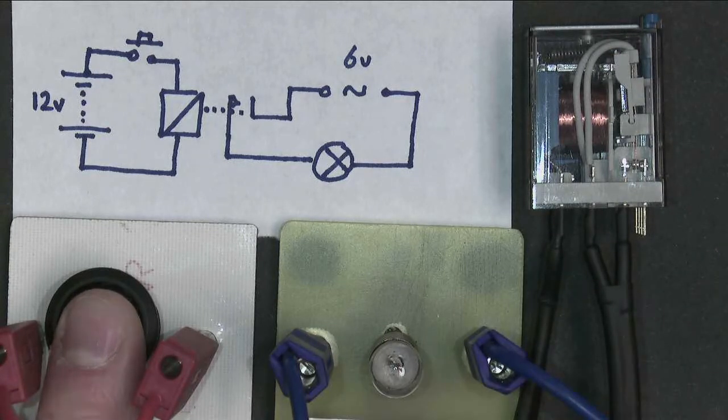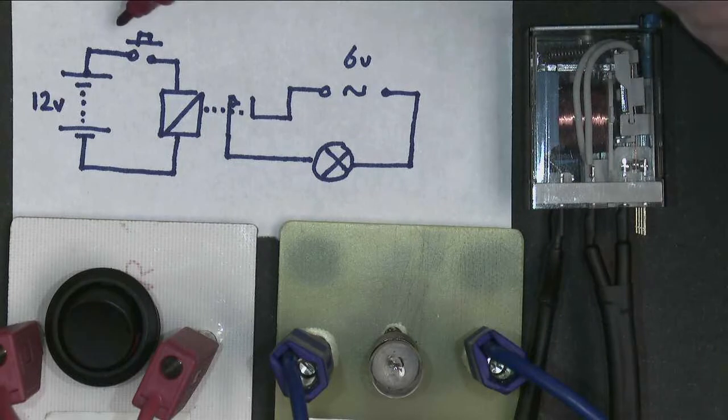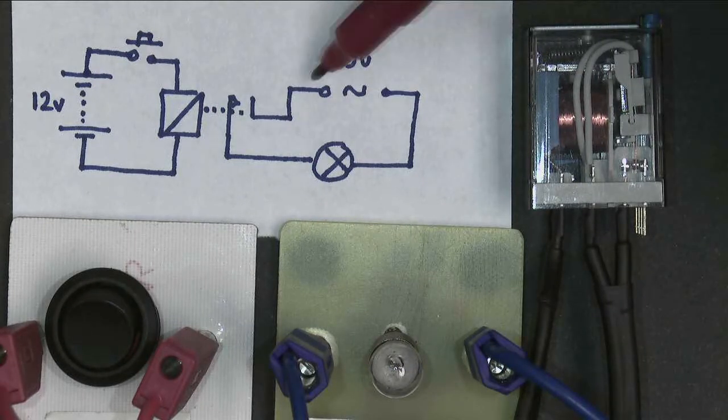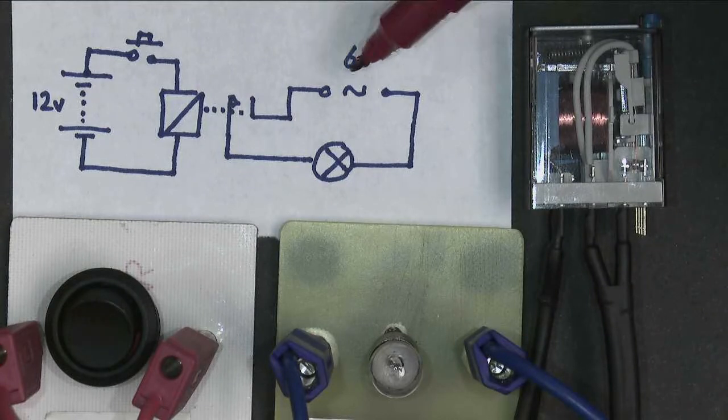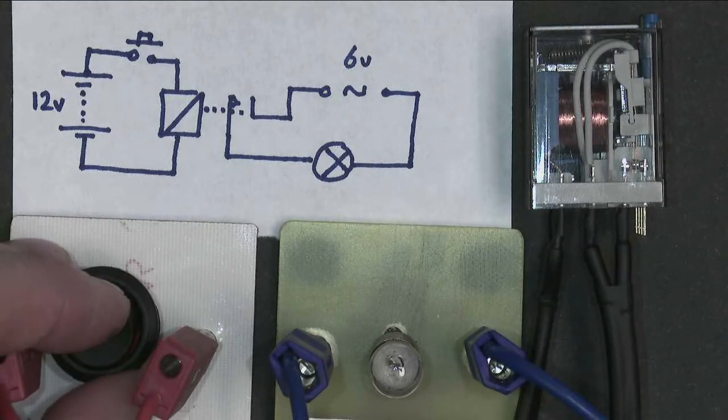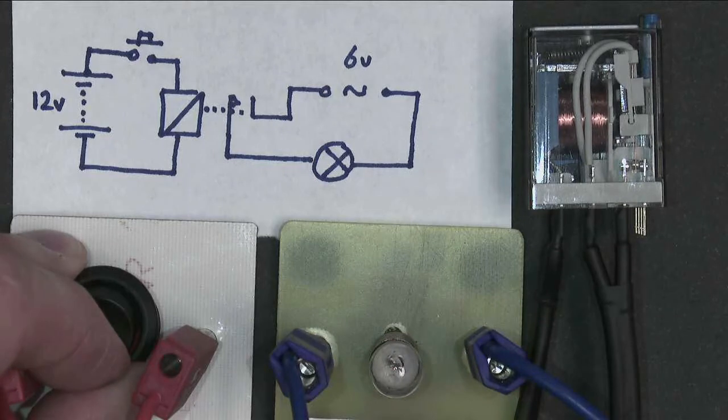So a relay allows one circuit operating at one voltage to control a second circuit operating at a different voltage. Turn the bulb on, turn the bulb off.